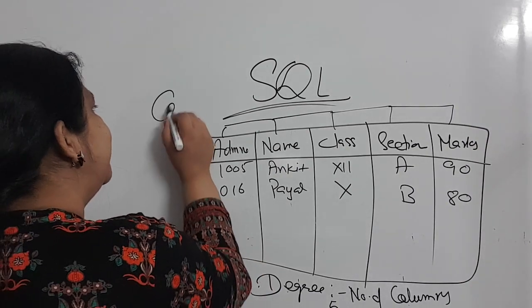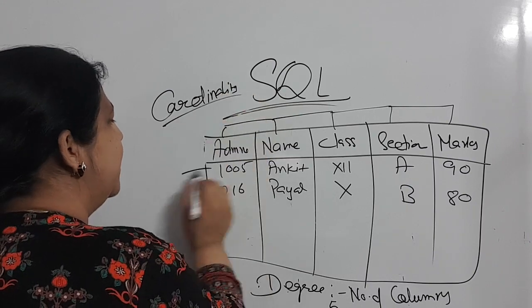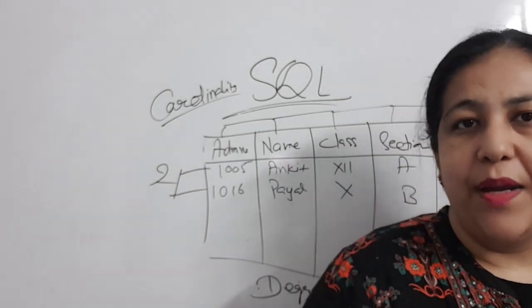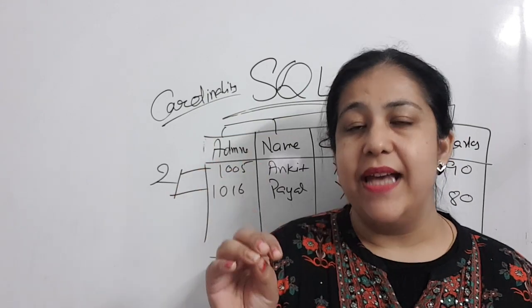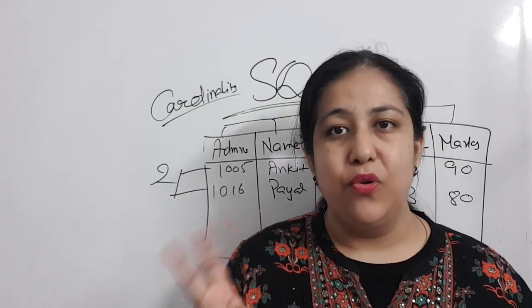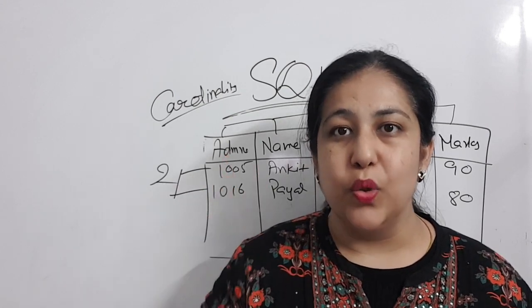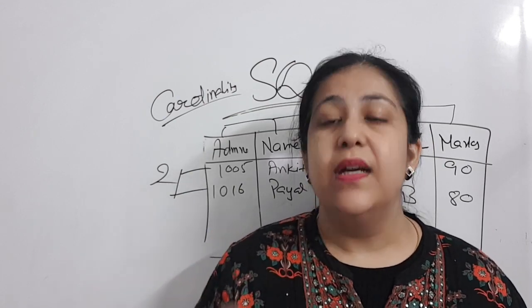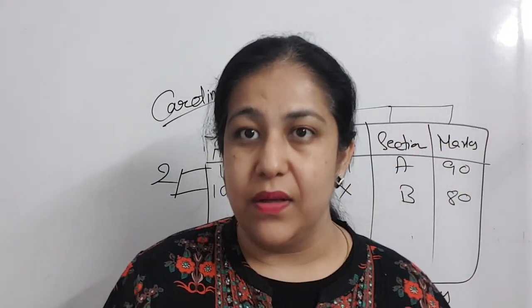Second: cardinality. Cardinality is the number of rows in your table. In this table, there are 2 data rows — you do not count the heading row, only the data rows. So the cardinality here is 2. It's a very easy question. Always remember: degree is the number of columns, cardinality is the number of rows.